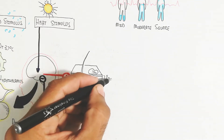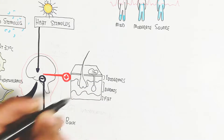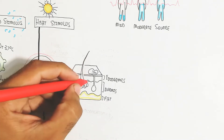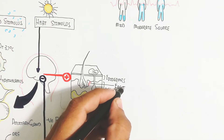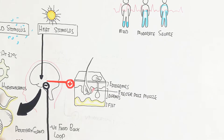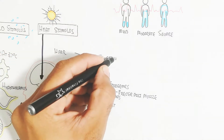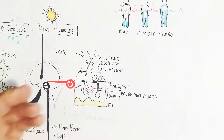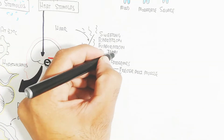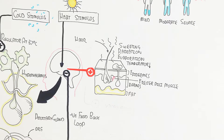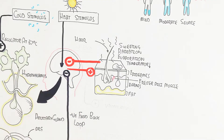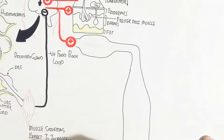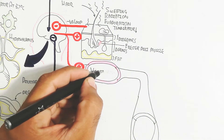To decrease temperature, sweating occurs at the skin. The skin contains the epidermis, dermis, and a fat layer used for insulation during cold weather. The erector pili muscle helps preserve heat. In warm conditions, sweating, radiation, and evaporation decrease temperature. Vasodilation of blood vessels near the skin promotes evaporation and heat loss, sending negative feedback to inhibit hypothalamus function.